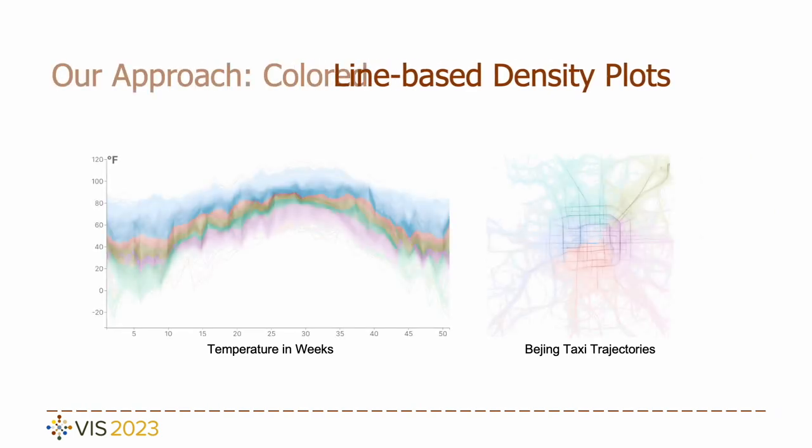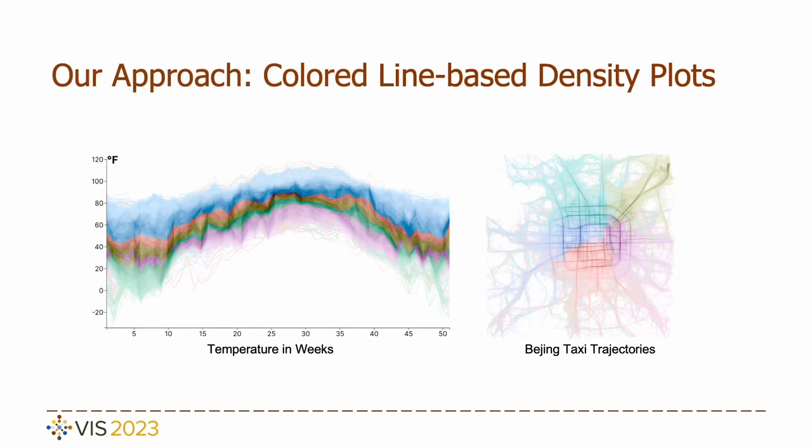To enhance clarity and reduce ambiguity, we introduce a colored density plot. By assigning similar colors to similar areas, we emphasize their resemblance and effectively minimize ambiguity. As you can see in these two colored density plots, the zigzag ambiguity on the left vanishes, and the ring pattern on the right becomes more distinct, breaking into multiple segments.